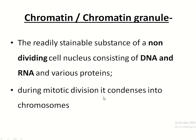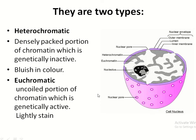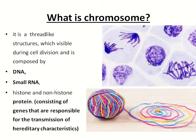During mitotic division, chromatin is condensed into chromosomes. This is the cell nucleus, and this is the chromatin. This is heterochromatin and this is euchromatin. Heterochromatin contains inactive DNA and it is bluish in stain. Euchromatin contains active DNA and it is lightly stained.